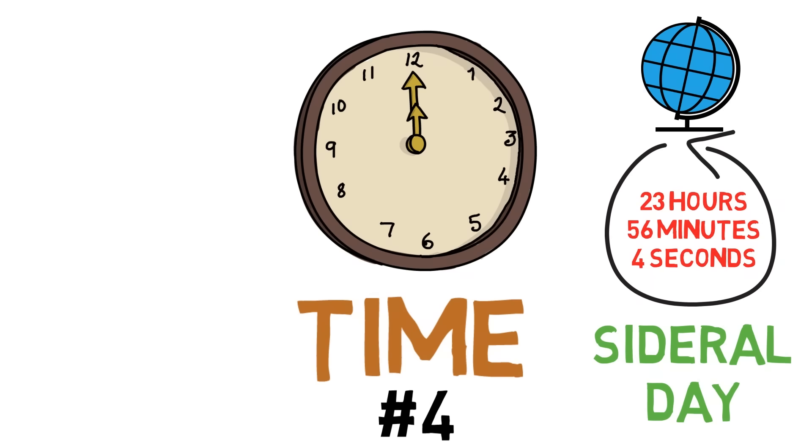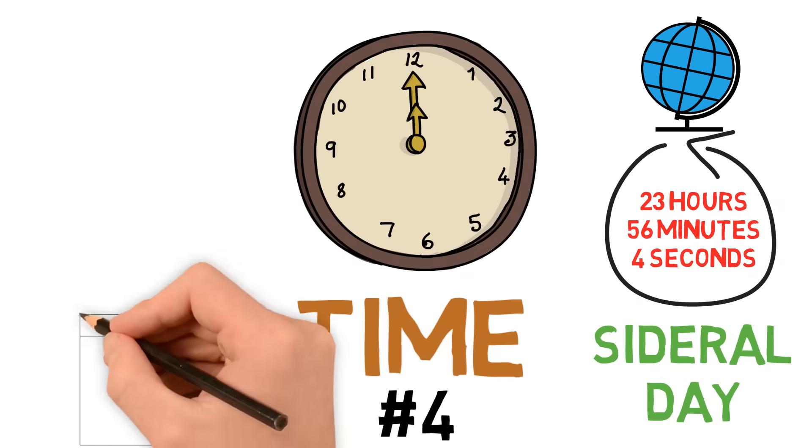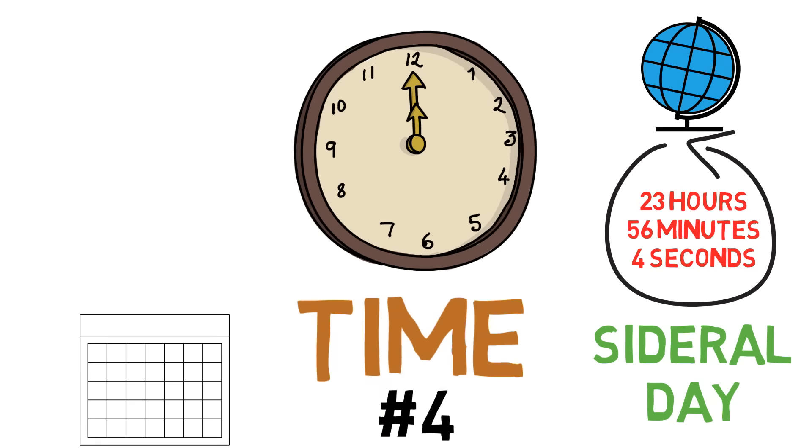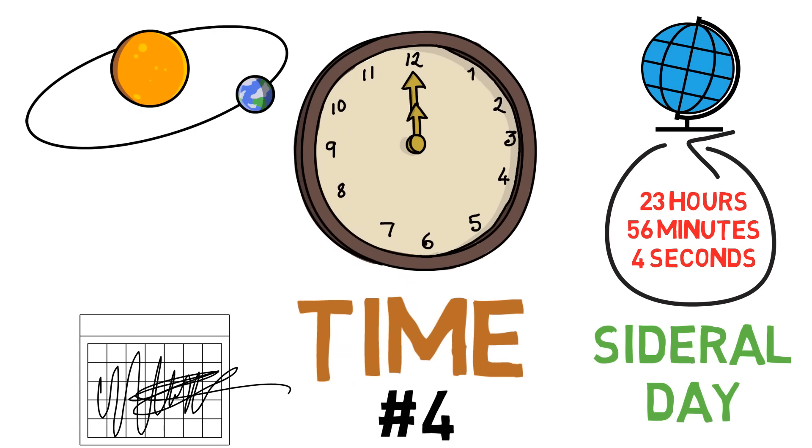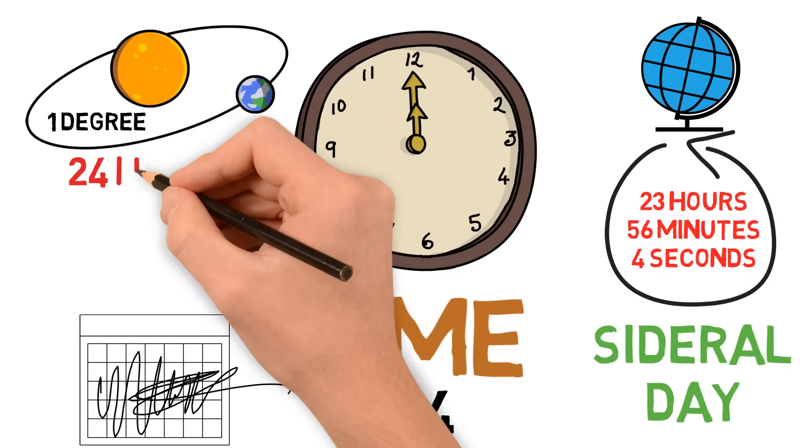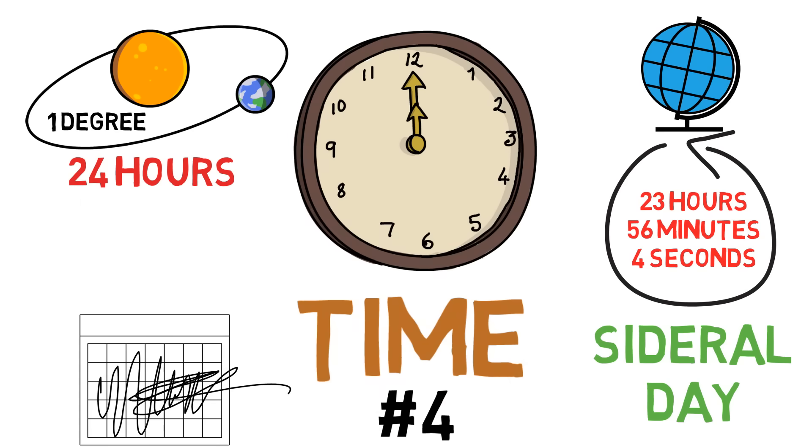Now, if the sun was standing still, these extra 4 minutes would eventually add up and completely mess up our schedules. But thankfully, the sun is moving as well. Sort of. Every day, it moves 1 degree compared to the background stars. And that makes up for the 4 minutes, creating a total of 24 hours, which is technically known as a solar day, the amount of time that the sun takes to return to the same position in the sky.